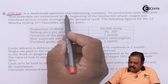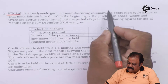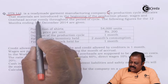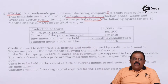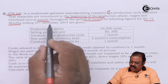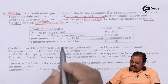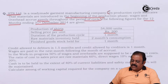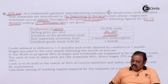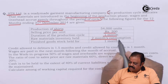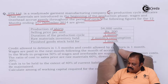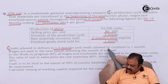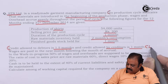STN Limited is a ready-made garment manufacturing company. Its production cycle indicates that materials are introduced in the beginning of the production phase; wages and overheads accrue evenly throughout the period of the cycle. The following figures for the 12 months ending 31st December 2014 are given: production of shirts 54,000 units, selling price per shirt rupees 200, duration of production cycle one month, raw material inventory held two months, finished goods stock held for one month.